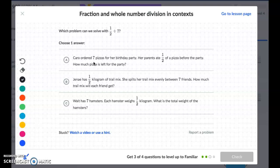That's going to be a subtraction problem because we're going to have 7 pizzas minus the half that was eaten. Jenay has half a kilogram of trail mix and she splits her trail mix evenly between 7 friends. She takes that half kilogram and divides it into 7 groups.